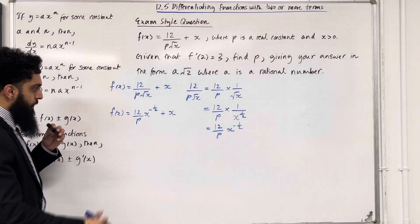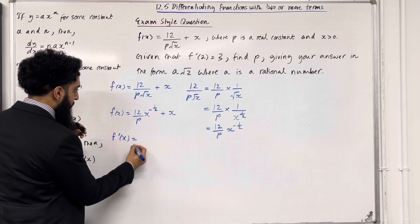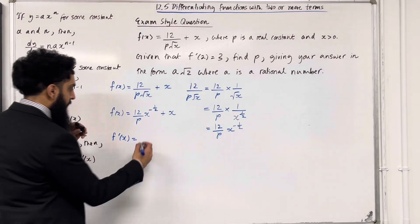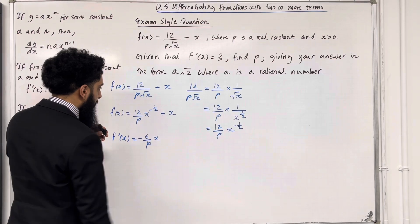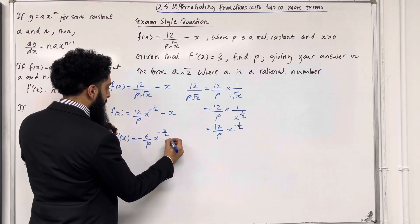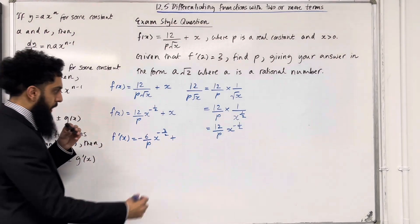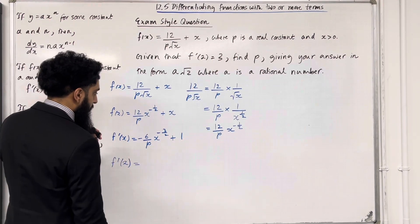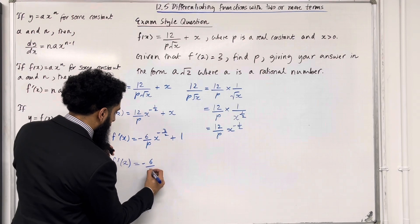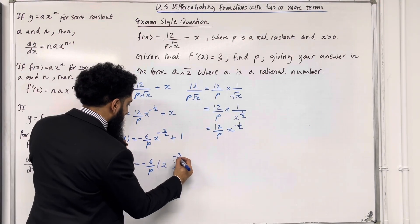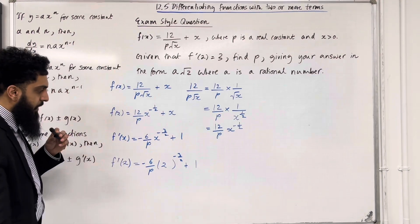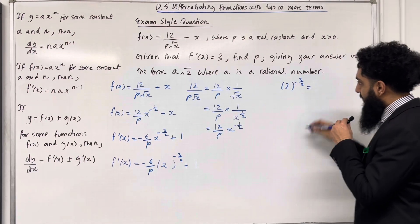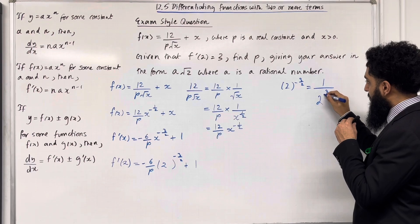Now we can use term-by-term differentiation. f'(x) equals: differentiating the first term, bring down the power — (12/p) × (−½) = −6/p, giving −(6/p)x^(−3/2). Then x differentiates to 1. So f'(x) = −(6/p)x^(−3/2) + 1. Now I work out f'(2) by replacing x with 2: f'(2) = −(6/p) · 2^(−3/2) + 1. We need to simplify 2^(−3/2), which can be rewritten as 1 over 2^(3/2) using laws of indices.